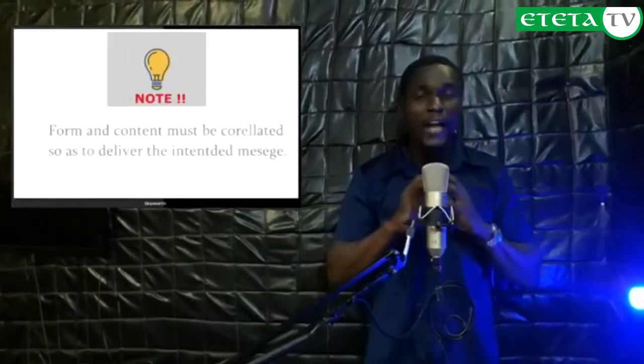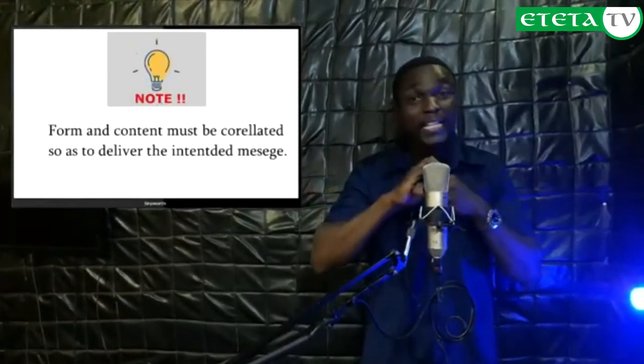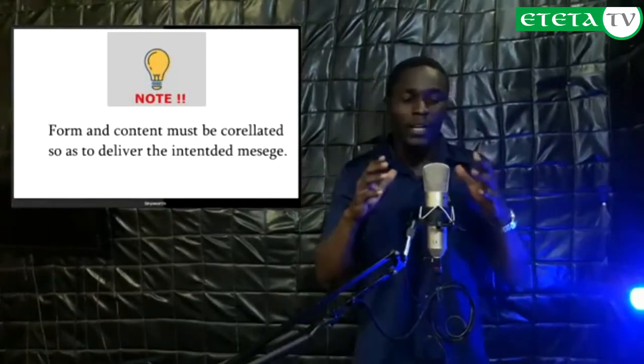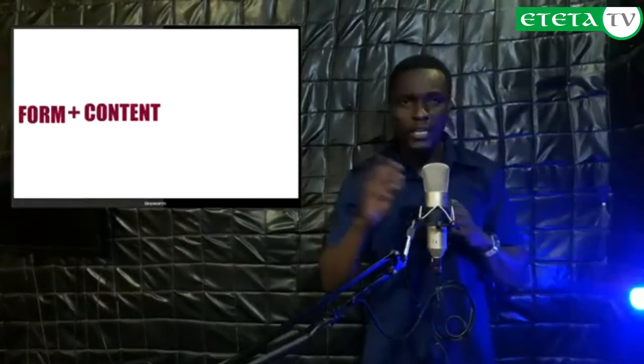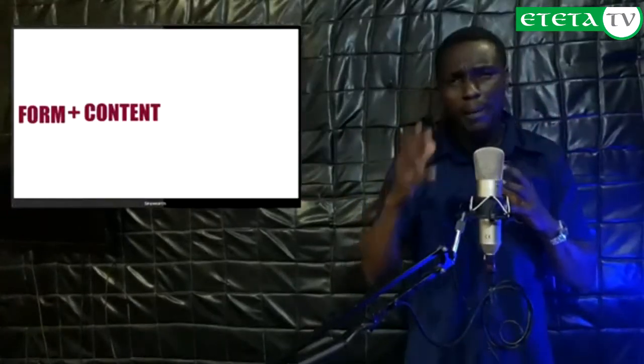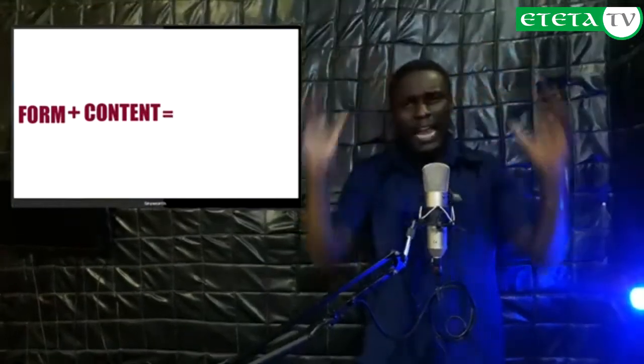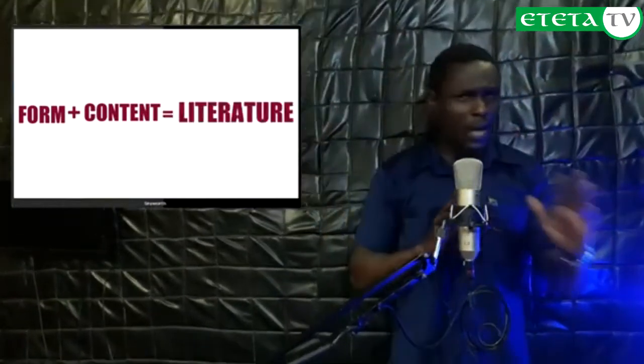Having seen the categories of literature, let us see what makes up literature. Whatever form of literature — be it spoken or written — it must have two major parts, and these two parts are inseparable. These two parts are form and content. Form cannot be separated from content; without form, the content is irrelevant. Each of these two depend on each other to deliver the message to the audience.